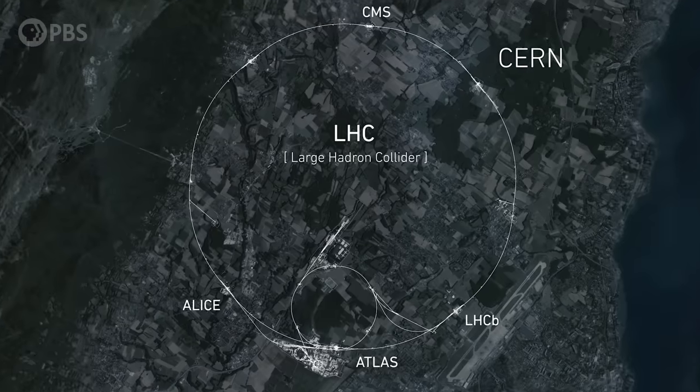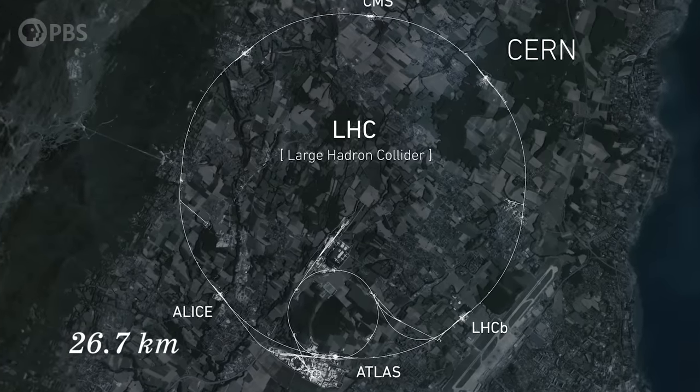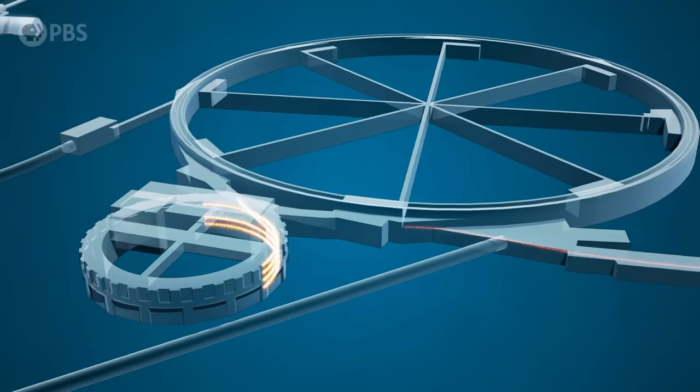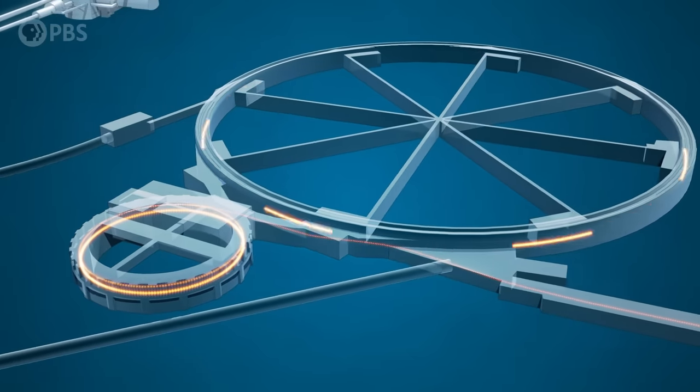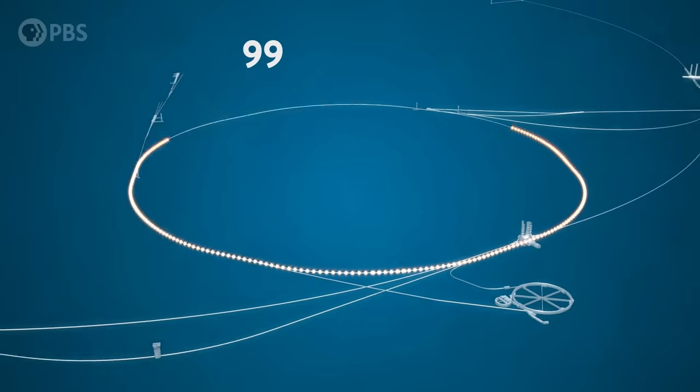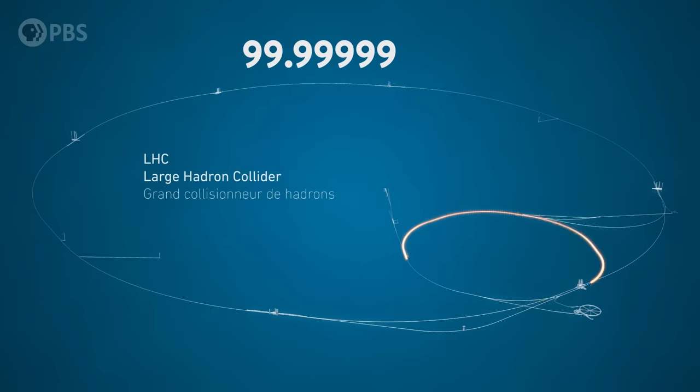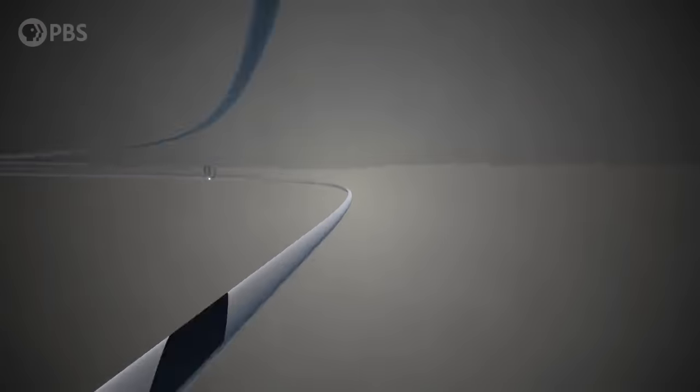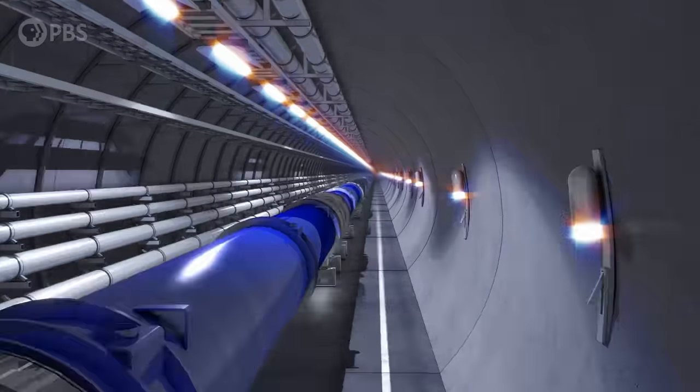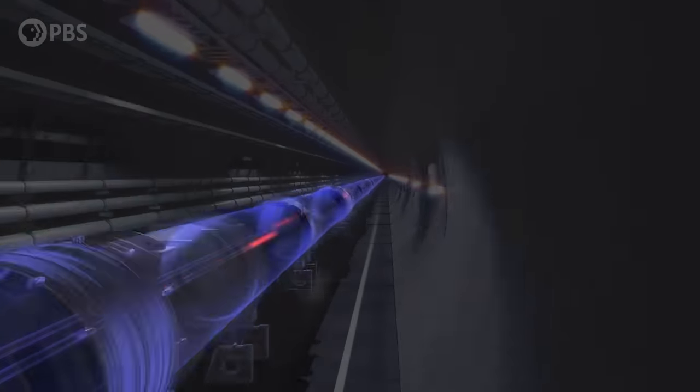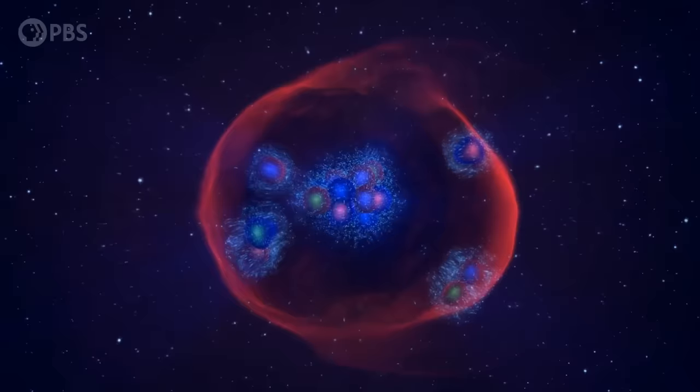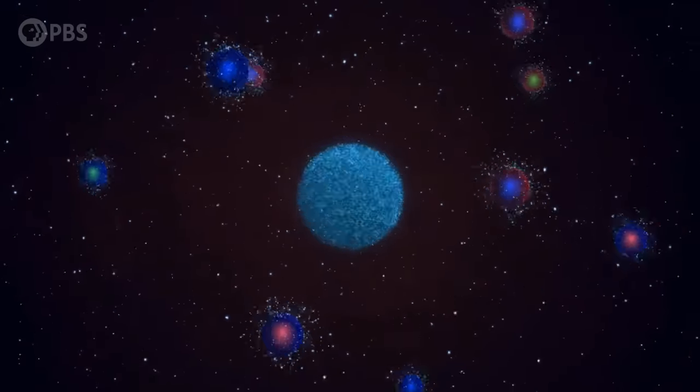The LHC is a ring over 16 miles long, and particles can travel around it over 11,000 times every second. They reach 99.9999991% the speed of light. And when they slam together, they create absolutely enormous amounts of energy. When the LHC is running ALICE experiments, it shoots beams of lead ions into gold, or more lead. It can make a billion particle collisions a second.